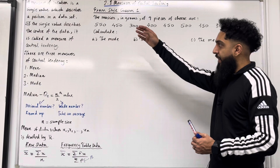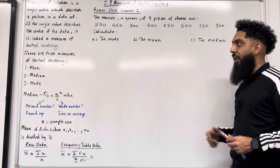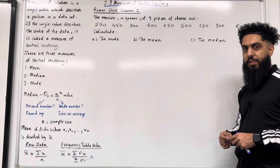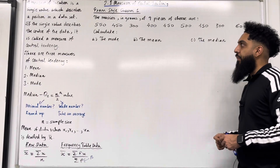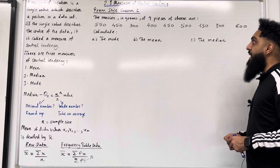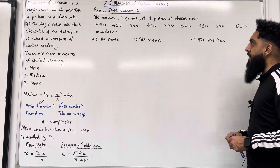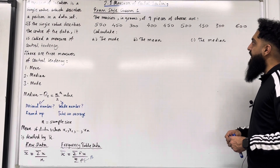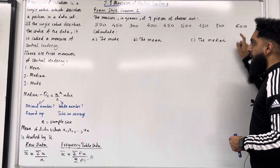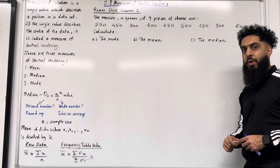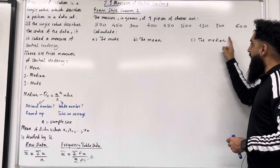Those are the key facts of 2.1 Measures of Central Tendency. We're going to be applying these key facts to exam style questions. Here is exam style question 1. The masses in grams of 9 pieces of cheese are 550, 450, 300, 400, 450, 500, 450, 300 and 600. Calculate part A the mode, part B the mean, and part C the median.